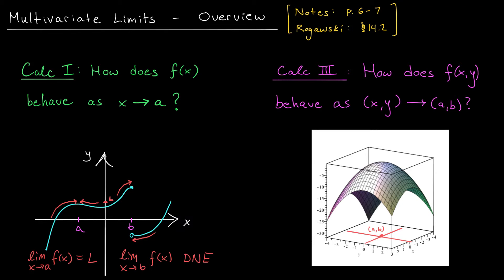After all, back in Calc 1, there were really only two ways for x to approach some target input a, either from the left or from the right. As long as the behavior of the function is the same along both of these paths, the limit will exist. In Calc 3, however, we don't just have a left path and a right path. We can approach (a,b) along infinitely many paths, from infinitely many different directions.